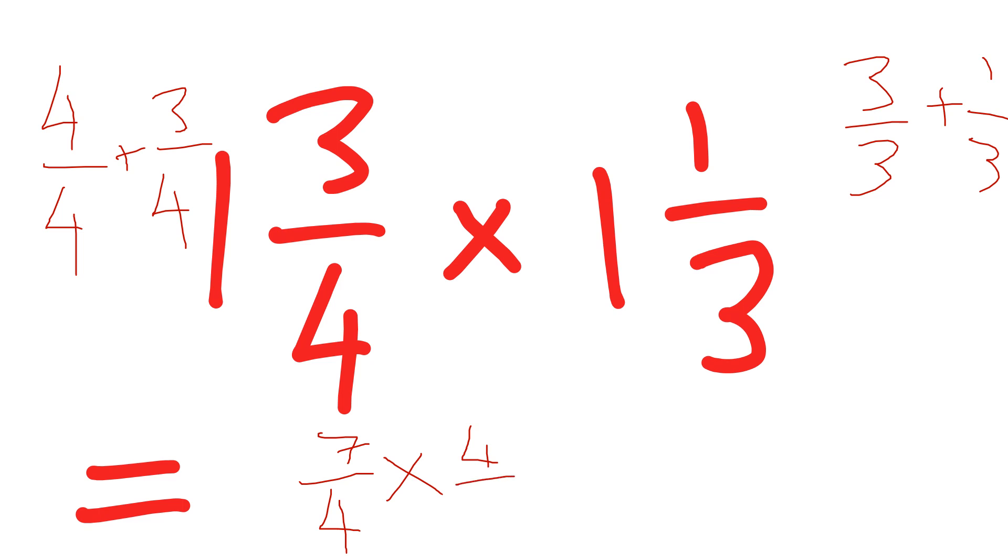Now I'm multiplying fractions, so I multiply top by top and bottom by bottom. Seven times four is 28 and then four times three is 12, so I get 28 twelfths. I can then simplify this by dividing top and bottom by two because they're both even. I get 14 sixths, again they're both even, so divide top and bottom again by two and I get seven thirds.